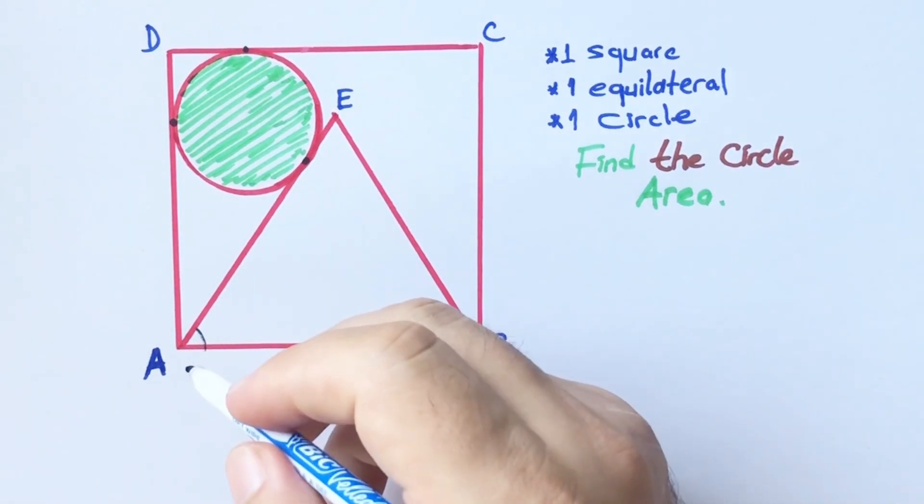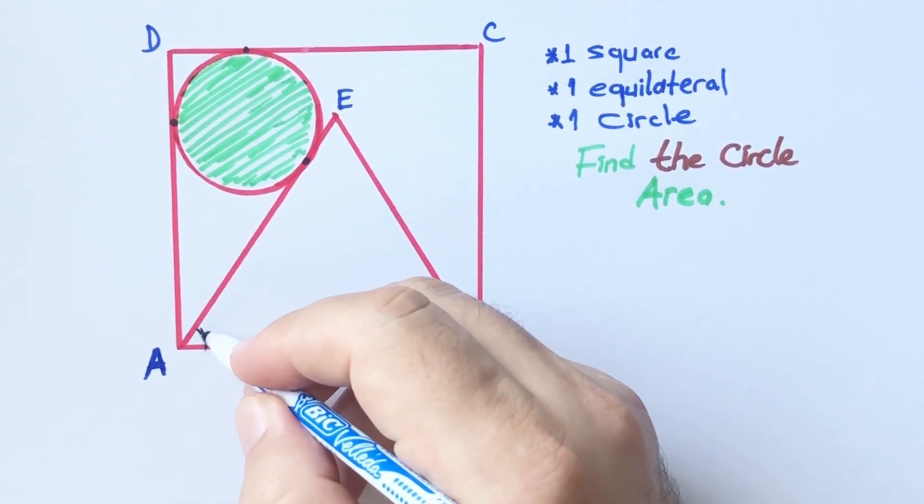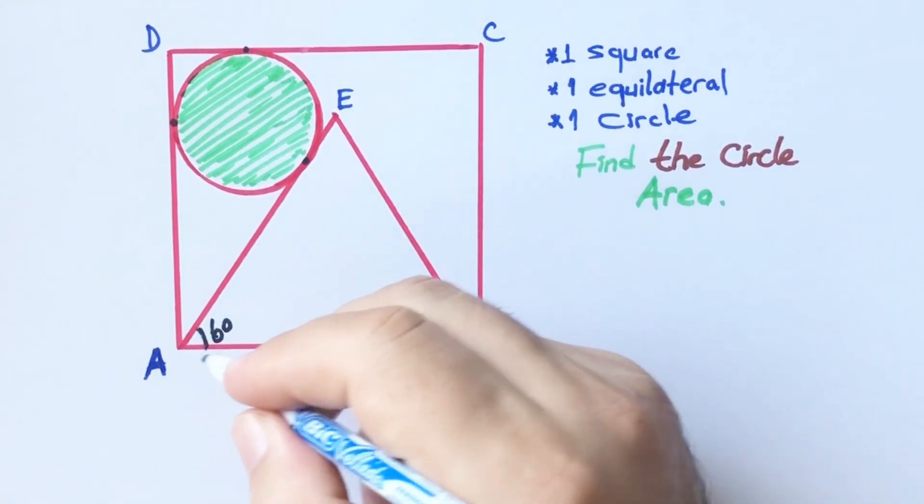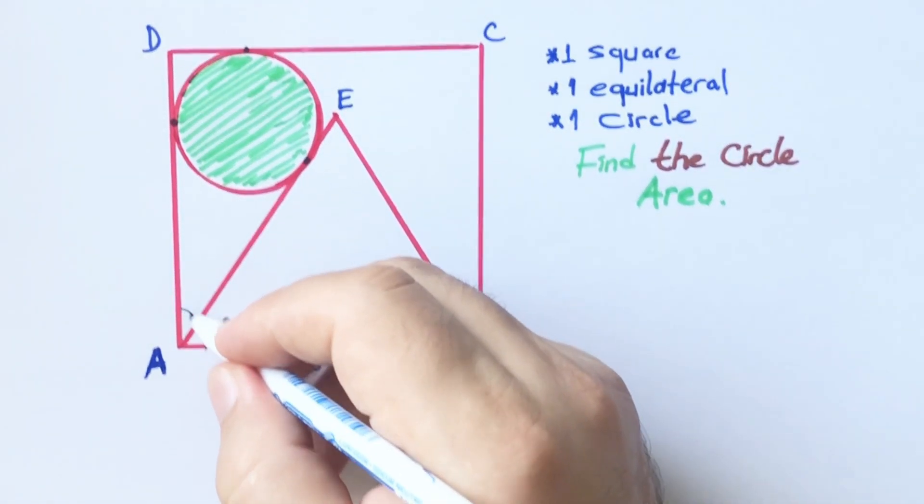First, let me note that here must be 60 degrees because of the equilateral triangle, and 30 degrees left here.